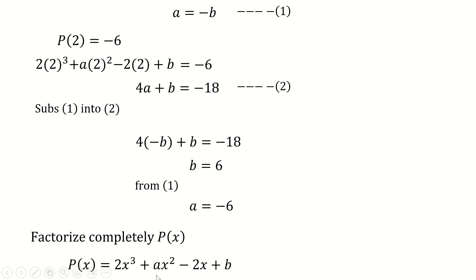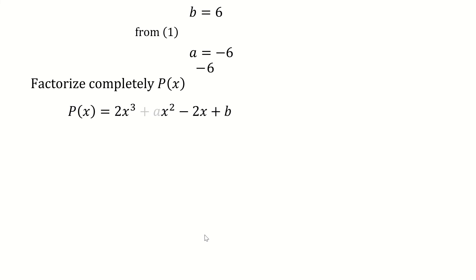We substitute a = -6 and b = 6 into the polynomial p, which becomes 2x³ - 6x² - 2x + 6. Since the highest power is 3, this polynomial should have three linear factors, and we already know one of them is x minus 1 from the question.